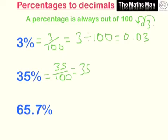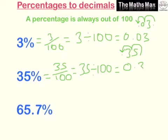For 35%, it's the same as 35 over 100, which is the same as 35 divided by 100. We take the number 35, move the decimal point back once and twice, so our answer is 0.35.